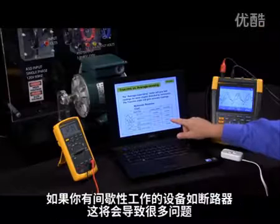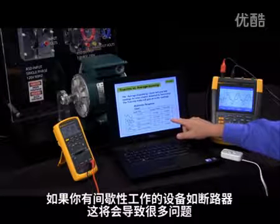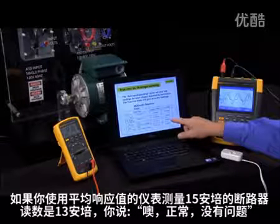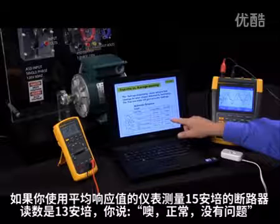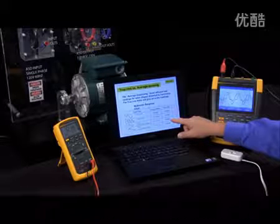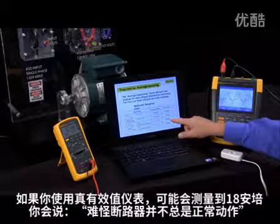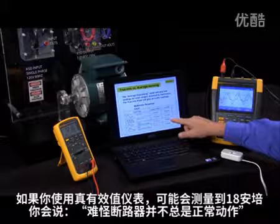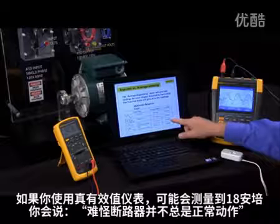This could cause you a lot of problems if you have a breaker that's popping intermittently and you measure it with an average responding meter. You're reading 13 amps on a 15-amp breaker. You say, okay, well that's not the problem. If you take a true RMS meter, you might read 18 amps on that 15-amp breaker, and then you're saying, I wonder why it's not popping all the time.